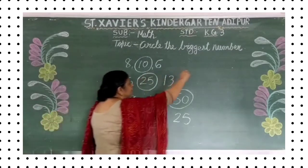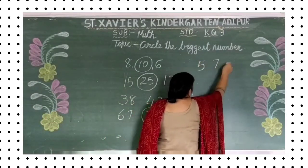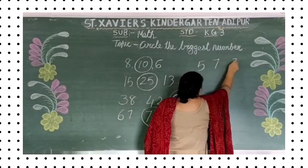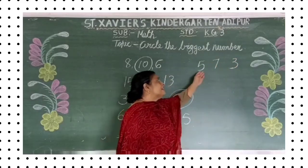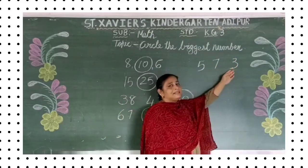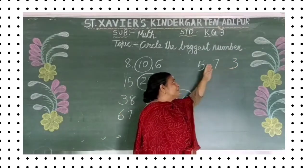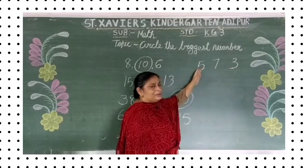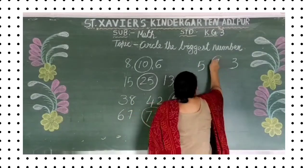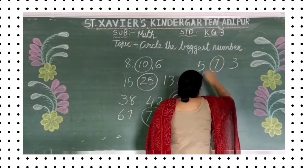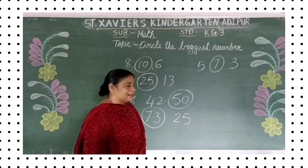Now — five, seven, three. Three se bada five. Aur five se bada seven. Yes, so seven is the biggest number. Circle it.